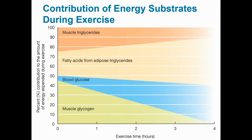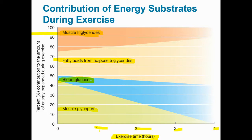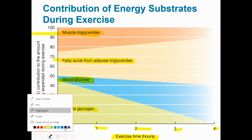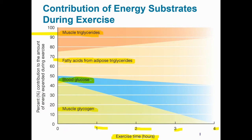This chart shows how over time during exercise — one, two, three, four hours — our bodies use varying amounts of different energy substrates: blood glucose, glycogen stored in liver and muscle, fatty acids in adipose tissue, and fatty acids in muscle adipose. As the duration of exercise increases, we start to use a whole lot more stored fat. We also start to use more blood glucose, which is something we don't really want to do.